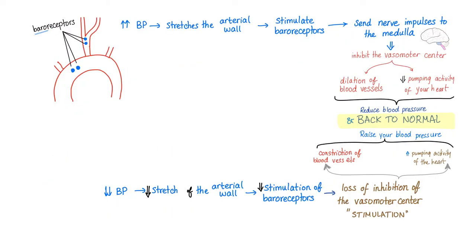Now let's turn our attention to blood pressure regulation. Let's suppose that you have increased blood pressure. This will stretch your arteries. In your arterial walls, especially the aortic arch and the bifurcation of the carotid artery, you have some structures called baroreceptors.